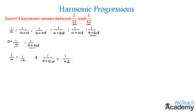We have two equations. From the first equation, on cross multiplying, we get a = 12. Coming to the second equation, cross multiplying gives us a + 5d = 42.